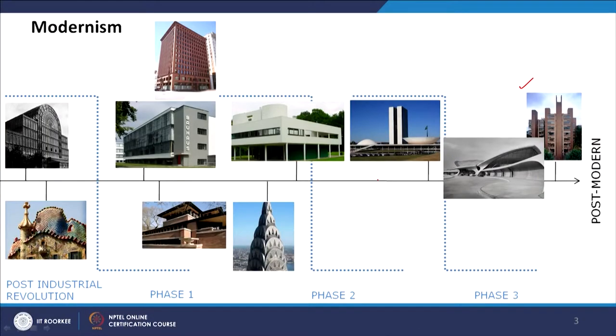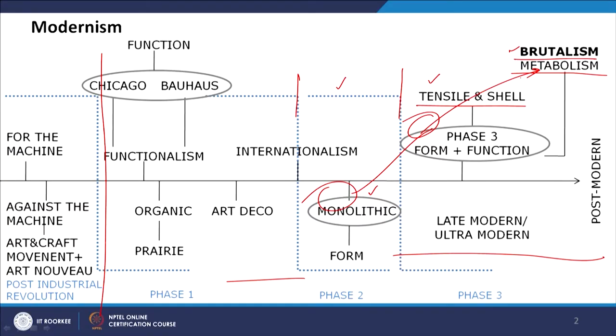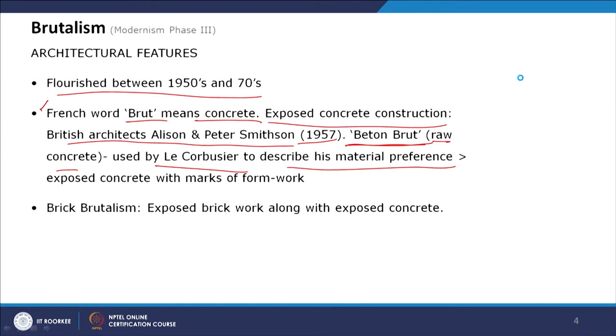Architecture is not just one movement ending and another starting — there can be a continuum, and many examples can fall under different movements. Examples placed under the monolithic style, or tensile and shell, like Ronchamp Cathedral, can also be considered brutalism because exposed concrete was the main material. Brutalism started with concrete, but later concrete got replaced with many other materials.